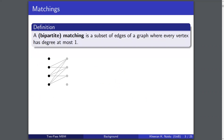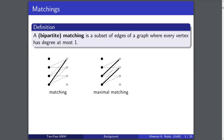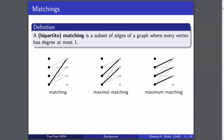Given a graph, a matching is simply a subset of its edges where every vertex has degree at most 1. A maximal matching is one such matching where if you were to add any other edge of the graph to the subset, it would break the matching property. Maximum matching is the largest possible matching in the graph.